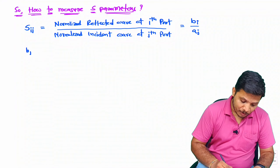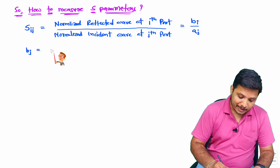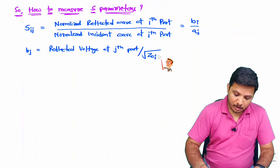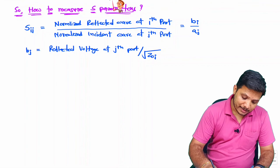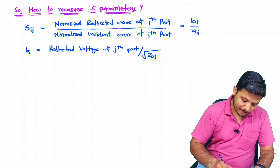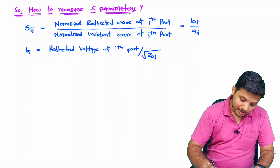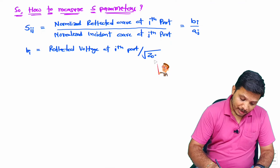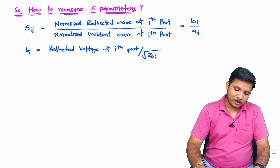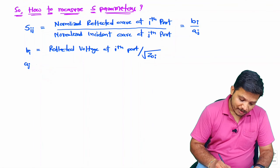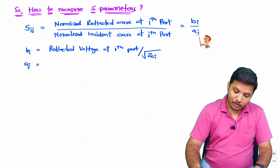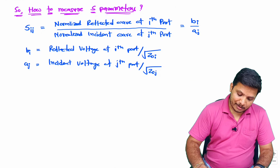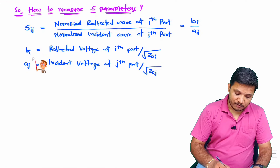To measure the normalized value B_i, we take the reflected voltage at the ith port and divide by the square root of the characteristic impedance of the ith port — that is, B_i equals reflected voltage at port i divided by square root of Z0_i. Similarly, the normalized incident wave A_j equals the incident voltage at the jth port divided by the square root of the characteristic impedance at the jth port. That is how we measure the exact values of B_i and A_j.